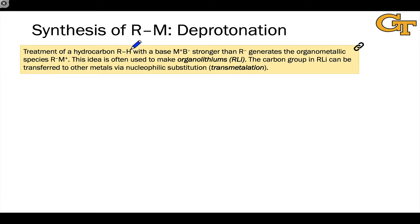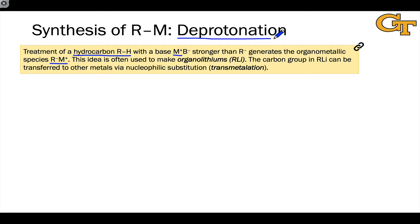The first approach is to notice that a typical organometallic reagent, R-M+, looks like the conjugate base of some carbon acid, RH. So if we treat a hydrocarbon with a strong enough base to deprotonate it, we can generate an organometallic species in which the metal counterion that came along with the base gets together with R- to form R-M+. The mechanistic idea here is simply deprotonation: M+B- deprotonates RH, B- becomes BH (the conjugate acid), and M+ gets together with R-.